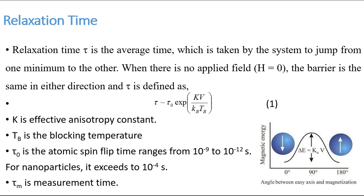Here is the Néel-Arrhenius law, which can be used to explain the relaxation of nanoparticles. Tau-nought is the atomic spin flip time, and in the case of nanoparticles its value can be down to 10 to the power of minus 9 to 10 to the power of minus 4 seconds. K is the effective anisotropic constant, V is the volume of the particle, k_B is the Boltzmann constant, and T_B is the blocking temperature.